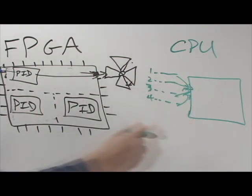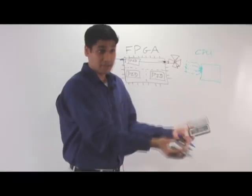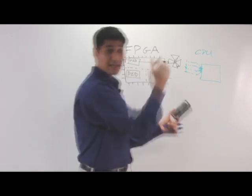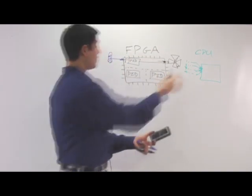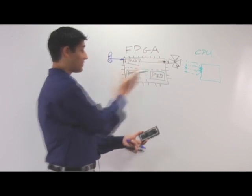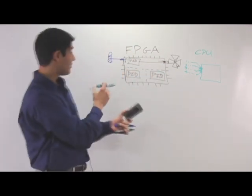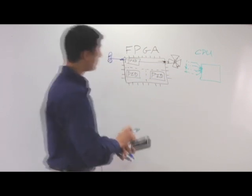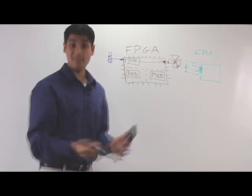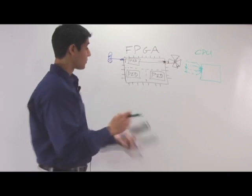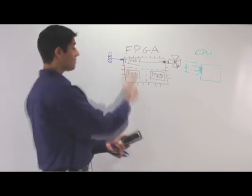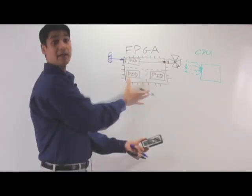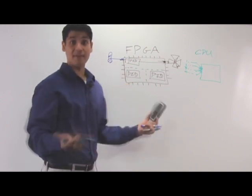So inherently, a processor is very good at doing many different things all at the same time by sequentially executing an instruction set, whereas an FPGA has dedicated blocks of silicon, which are running independently and not necessarily sharing resources for any given task. So that should give you a brief introduction to how FPGAs work and how you get true reconfigurability with hardware-timed speed and true parallel operation for any given application.